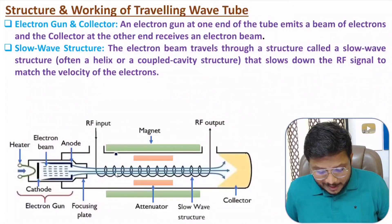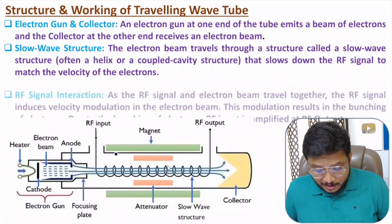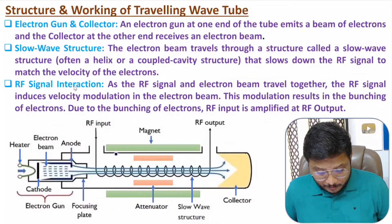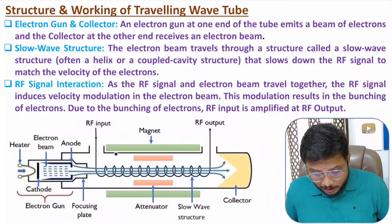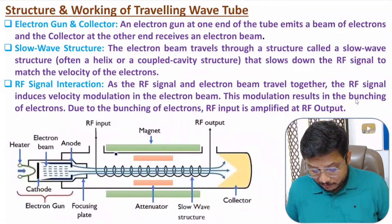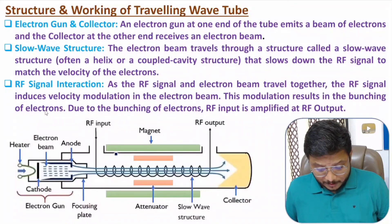Electrons move along with velocity modulation — this is the slow wave structure, due to the helical shaped winding. The third section involves RF signal interaction: the RF signal and electron beam travel together, causing velocity modulation. Due to velocity modulation, there is bunching of electrons, and due to bunching of electrons there will be an amplified RF output.